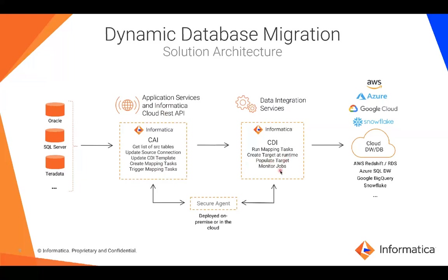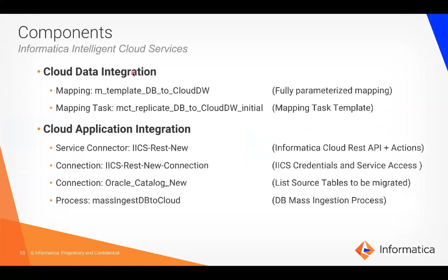The assets we are using here: one mapping template — a fully parameterized mapping — and a mapping task used for reference. You can see after running the process that this task is very similar to all the tasks being created. You're also going to have the service connector, the connection, the Oracle connection to list the source tables to be migrated, and the process itself.